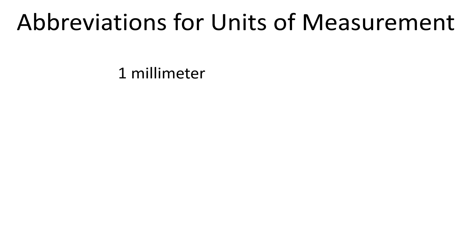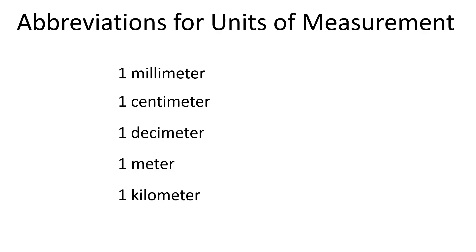We have short forms for units, so we don't have to write out millimeter, centimeter, decimeter, meter, or kilometer every time. The short form for millimeter is mm, for centimeter is cm, for decimeter is dm, for meter is m, and for kilometer is km.